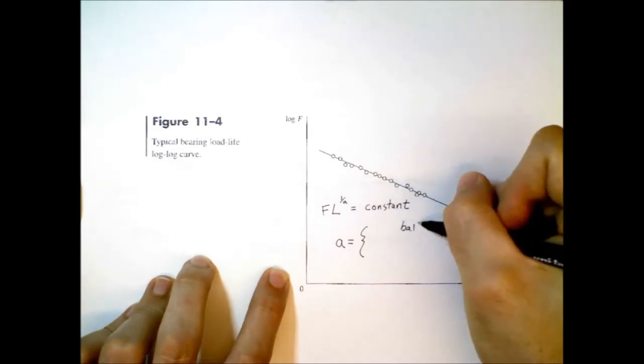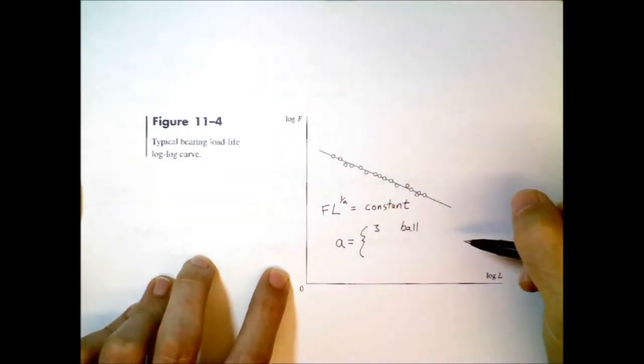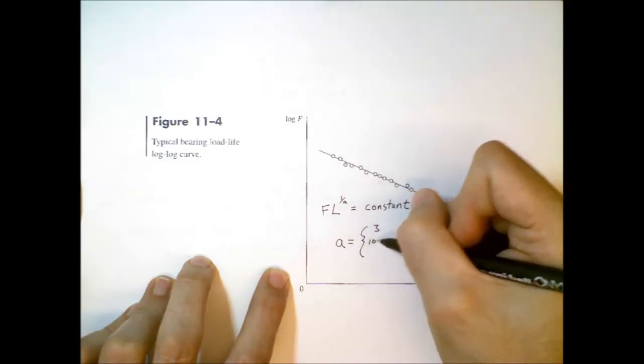And if we have a ball bearing, then A is equal to 3. If we have a roller bearing, then A is a little bit larger, 10 thirds.